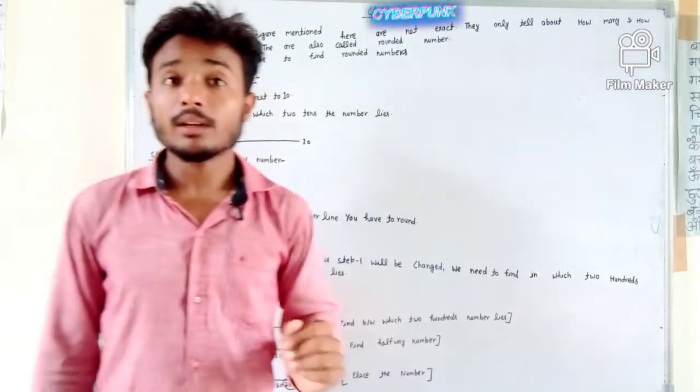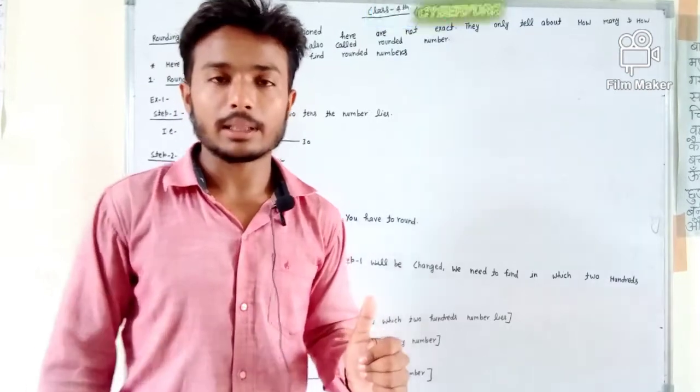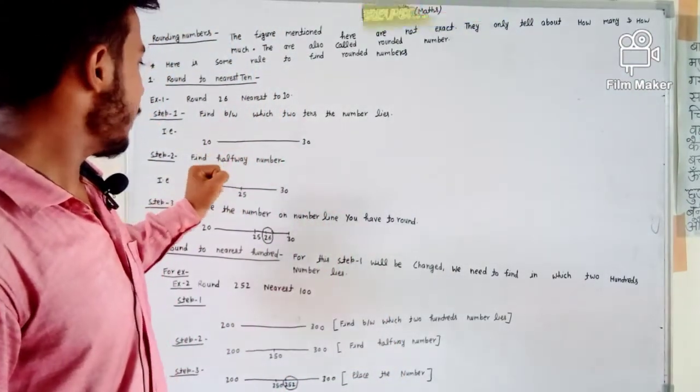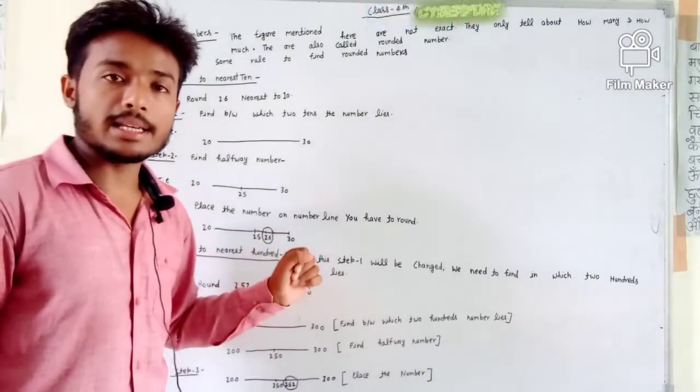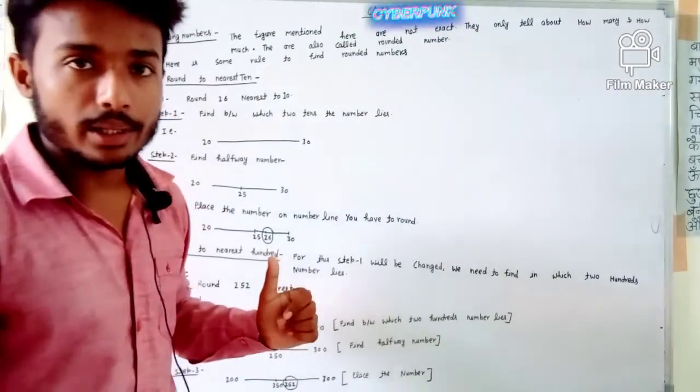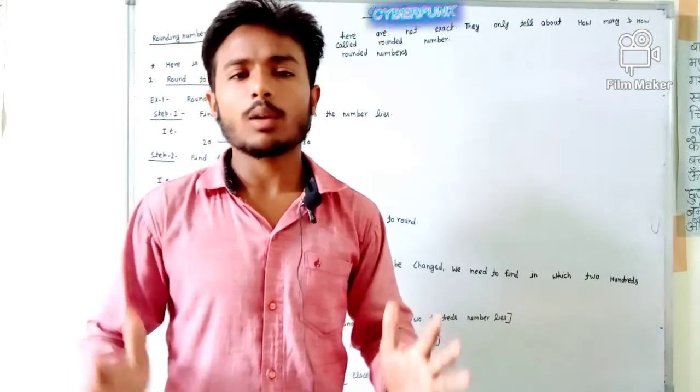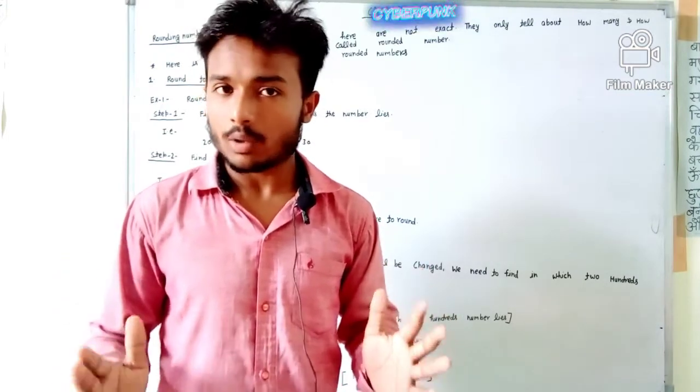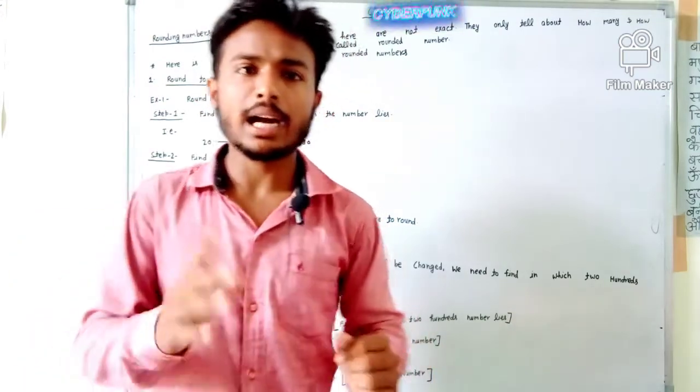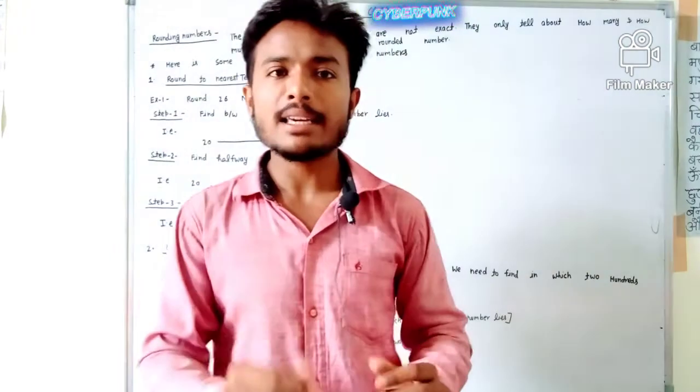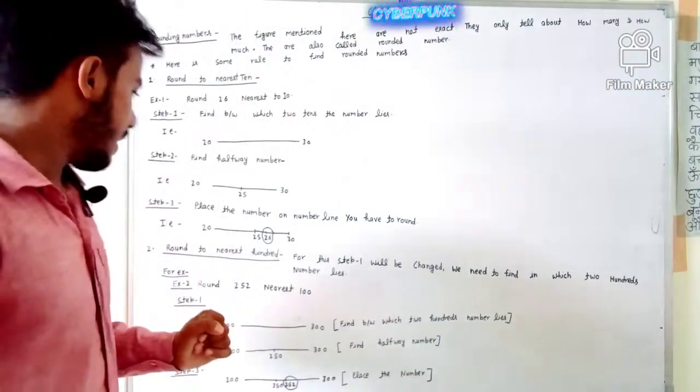The second rule is for rounding to nearest 100. This is the first rule where we find which two tens the number lies between. Now we will see for nearest 100, we will find out between which two hundreds the number lies.